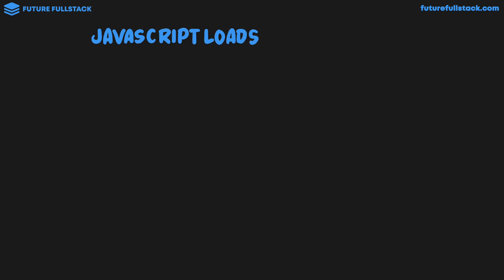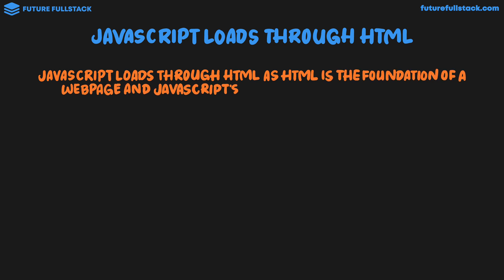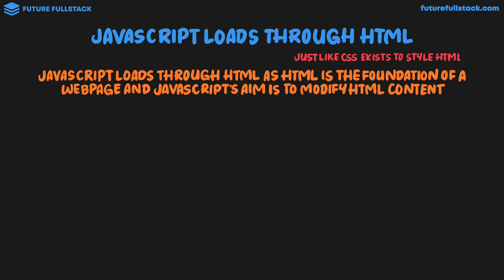The first thing we need to get our head around is that JavaScript loads through HTML. JavaScript loads through HTML because HTML is the foundation of a web page and JavaScript's aim is to modify HTML content. This is just like how CSS exists to style HTML. In order to load a CSS or JavaScript file in the browser, it has to be anchored inside an HTML file, because the browser is always expecting to first load content through HTML.